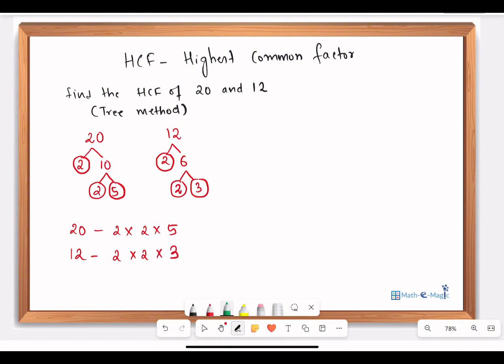I see that first of all this 2 is common to both. This 2 is common to both. I mark them. Then I see there is another pair of 2 that is common to both. I mark them as well.